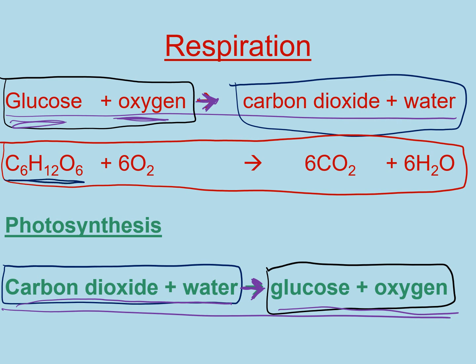So we have one molecule of glucose, C6H12O6, and six molecules of oxygen, O2. The chemical reaction of respiration happens, and the products are six molecules of carbon dioxide, CO2, and six molecules of H2O. It's a really easy one to remember: C6H12O6, and then your other substances are six molecules of each — six molecules of oxygen, six molecules of carbon dioxide, six molecules of water. Make sure you remember that equation off by heart. Pause the video, write it down, and we'll move on to the next slide.